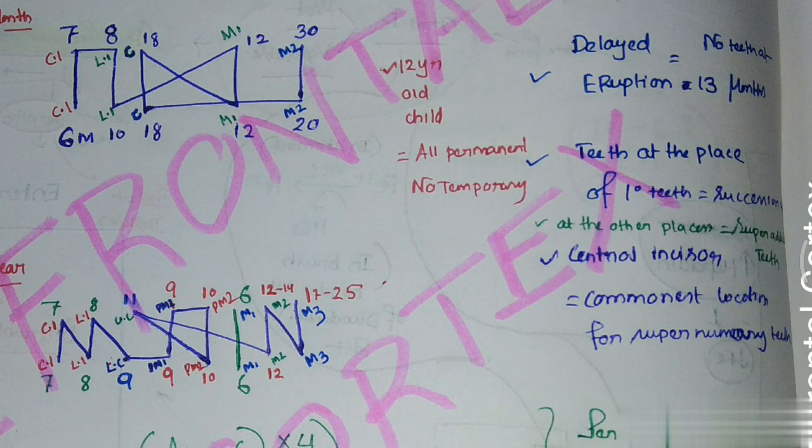Teeth that appear at the place of primary teeth are known as succession teeth, and teeth that appear at other places are named as superadded teeth.